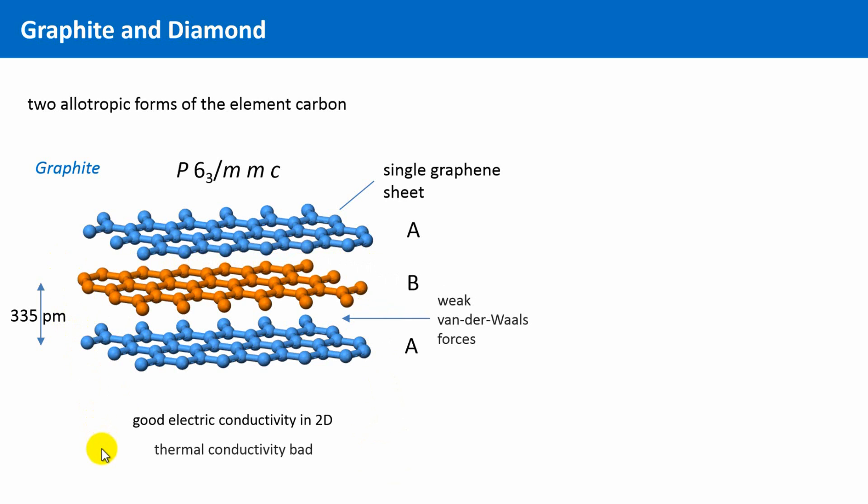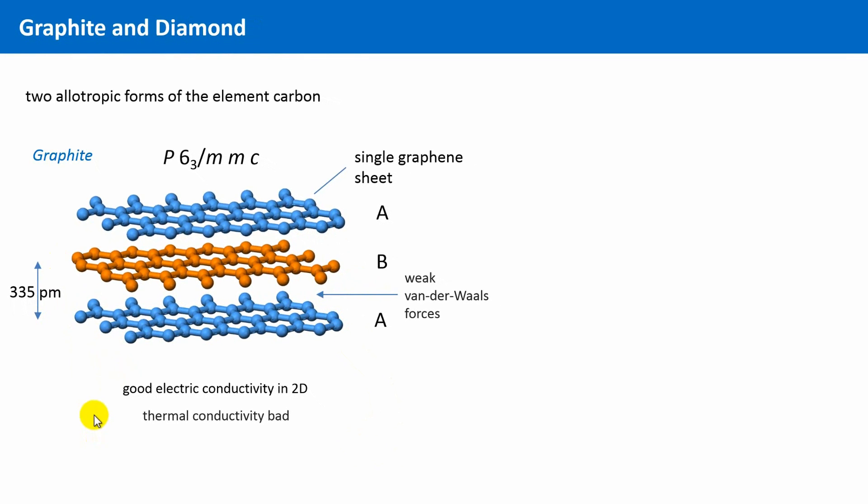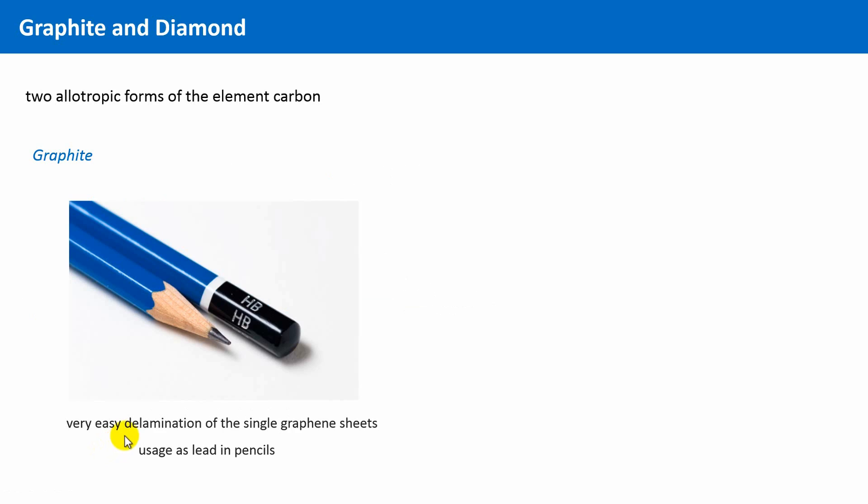And this layered structure is also the reason for another property graphite is commonly known for. It is a very soft material.